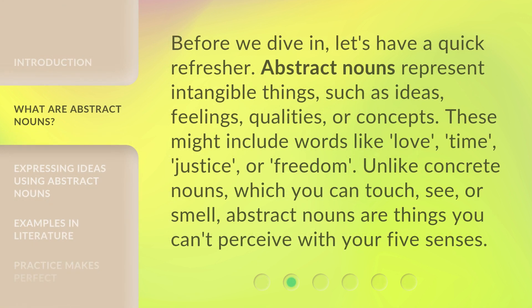Before we dive in, let's have a quick refresher. Abstract nouns represent intangible things, such as ideas, feelings, qualities, or concepts. These might include words like love, time, justice, or freedom.